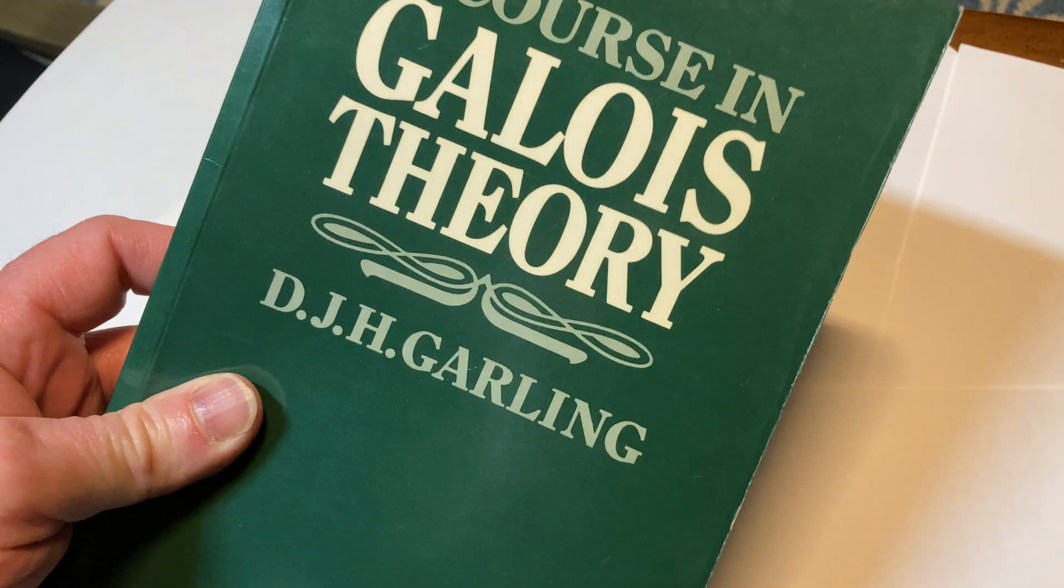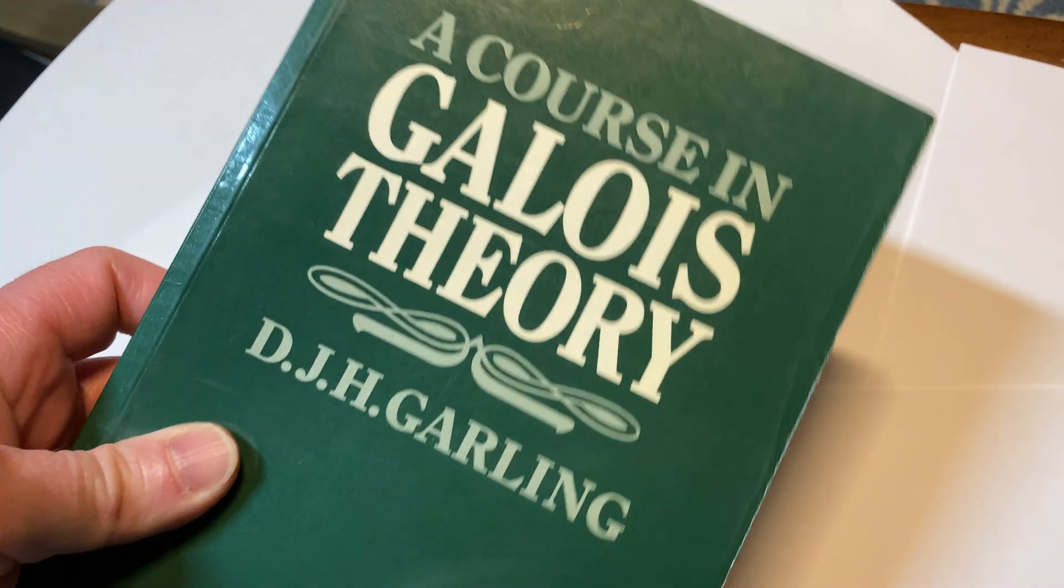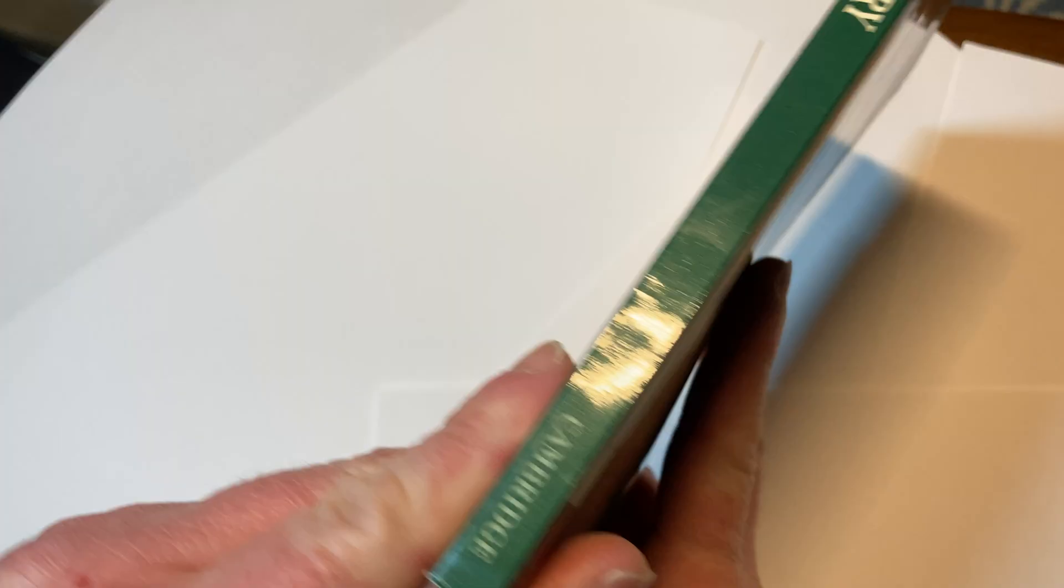This is a course in Galois theory by D.H. Garling. It's a softcover, Cambridge.